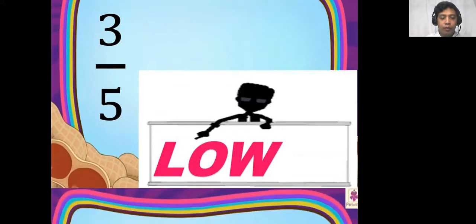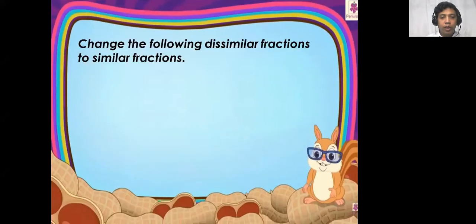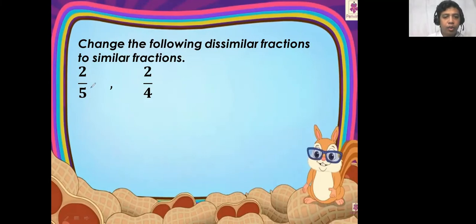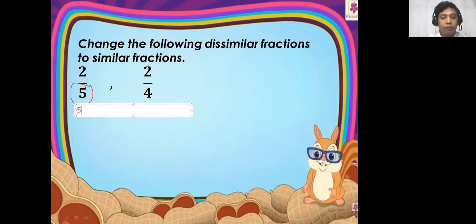Let's try another drill. Change the following dissimilar fractions to similar fractions. First, we need to get the multiples of five, the denominator of two-fifths. So, what are the multiples of five? Five, ten, fifteen, twenty, and next to twenty is twenty-five, then thirty.